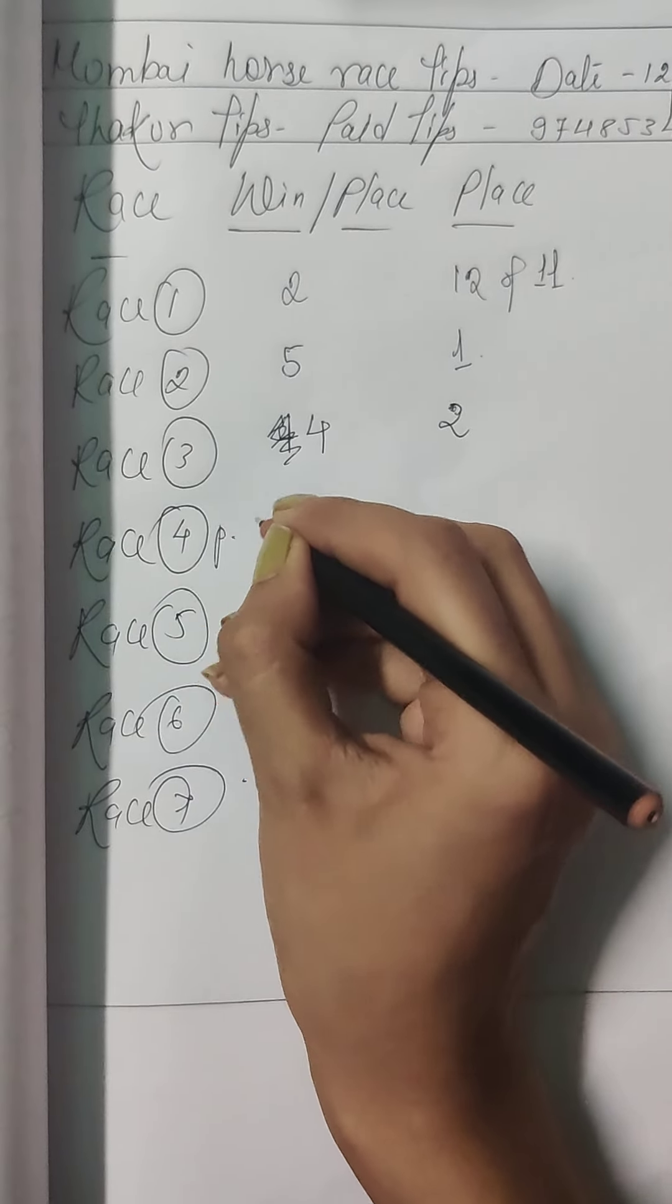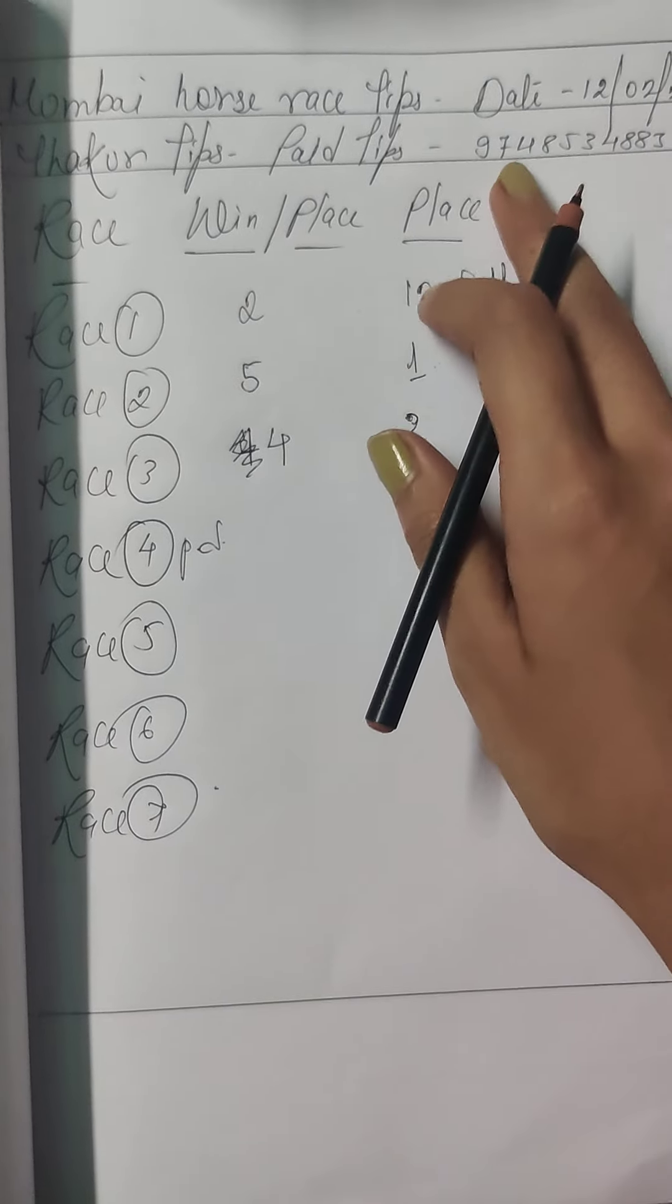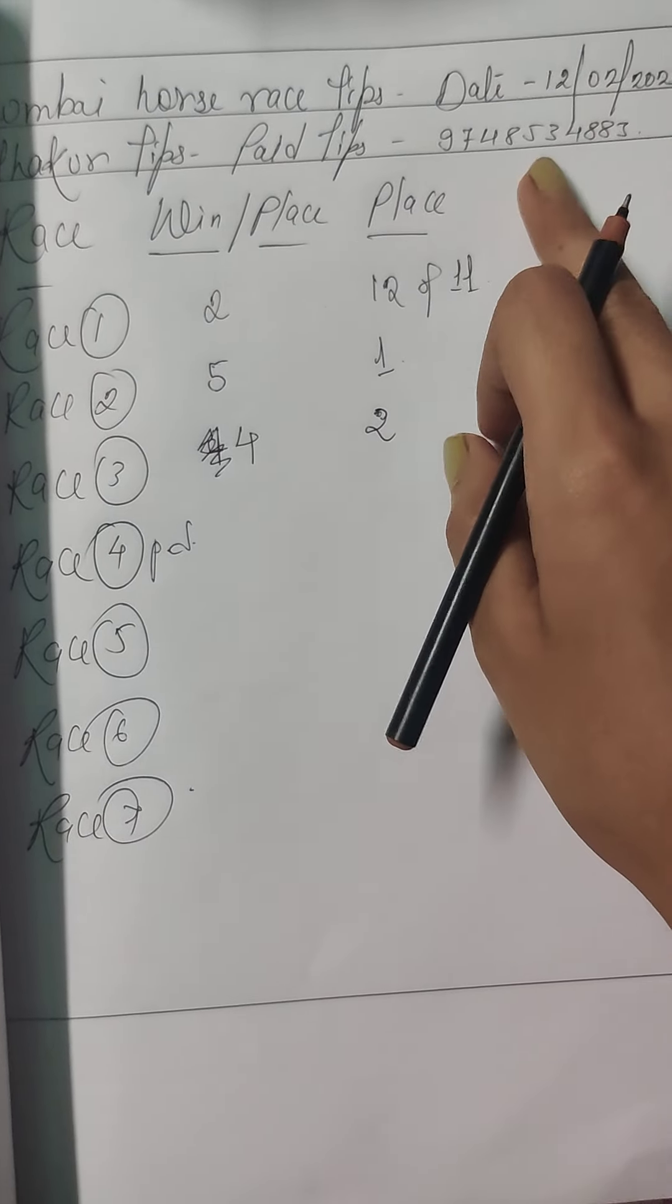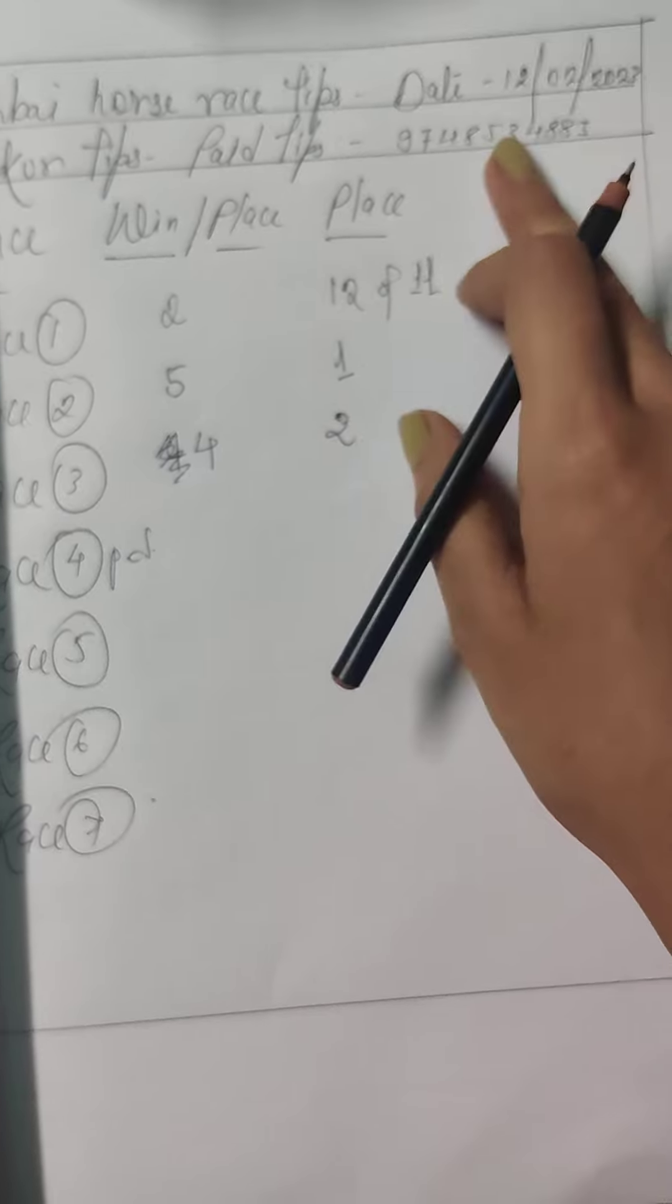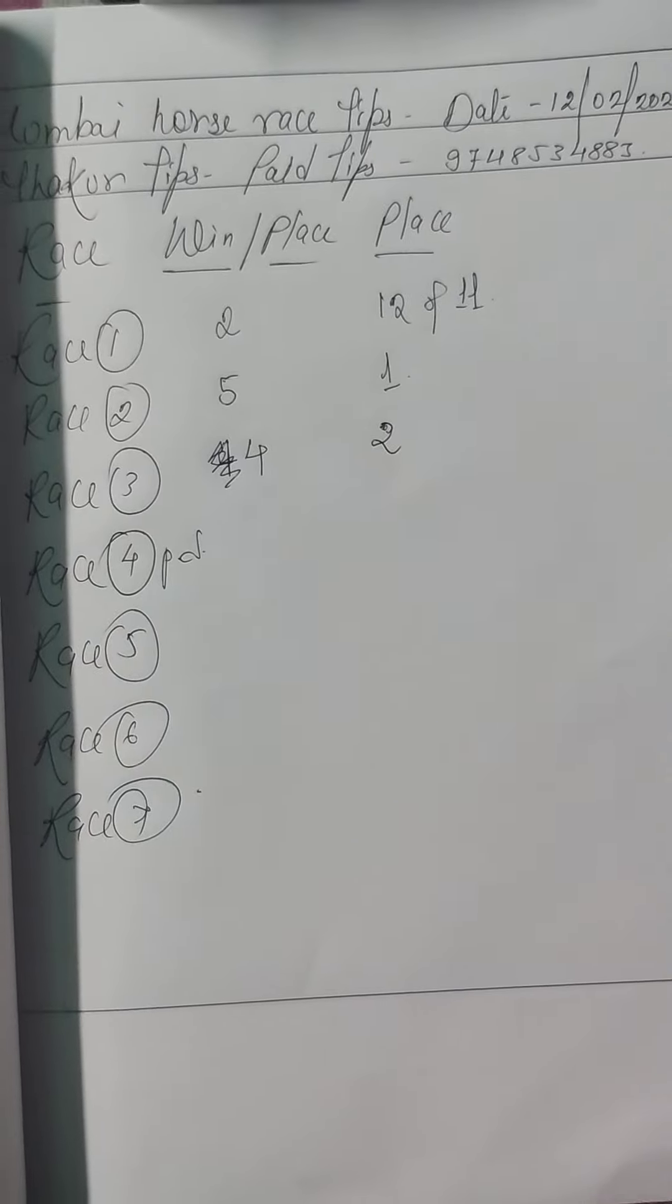Race number 4 is going to be our paid tips. For those who are really interested they can DM me on this given number, 9748533838, this number in description box and comment section, then I'll give you paid tips.